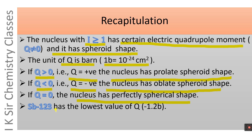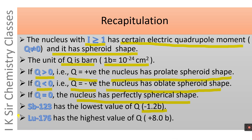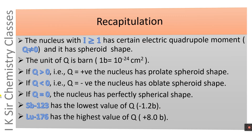Antimony-123 has the lowest value of Q, equal to minus 1.2 barn. On the other hand, Lutetium-176 has the highest value of Q, equal to plus 8.0 barn.